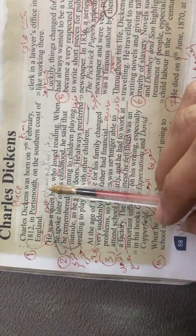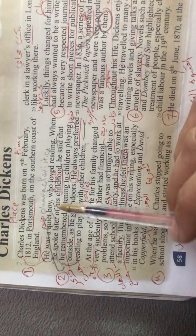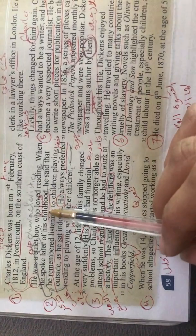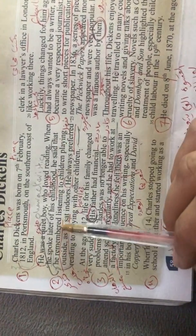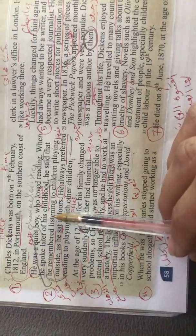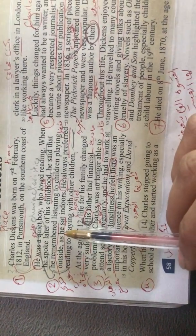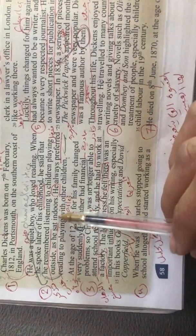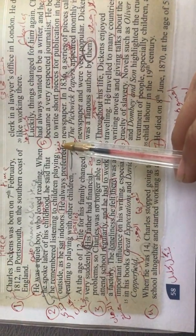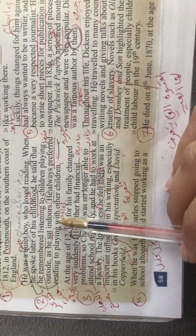Paragraph number two. Here are the main characteristics, الصفات الشخصية لشارلس Dickens. He was a quiet boy, هادي, who loved reading. When he spoke later of his childhood, لما كان يحكي عن طفولته, he said that he remembered listening to children playing outside while he sat indoors, كان قاعد جوا بالبيت بالداخل. He always preferred reading to playing بفضل إنه يقرأ على إنه يلعب outside with other children.